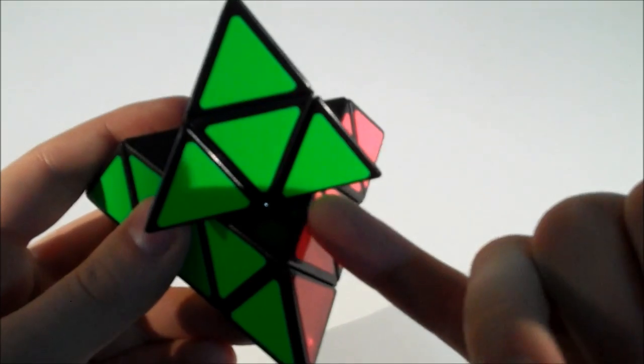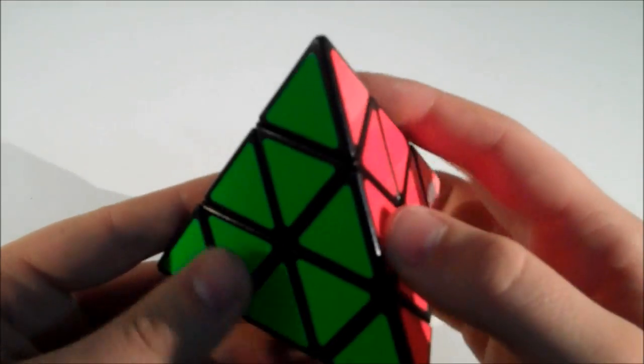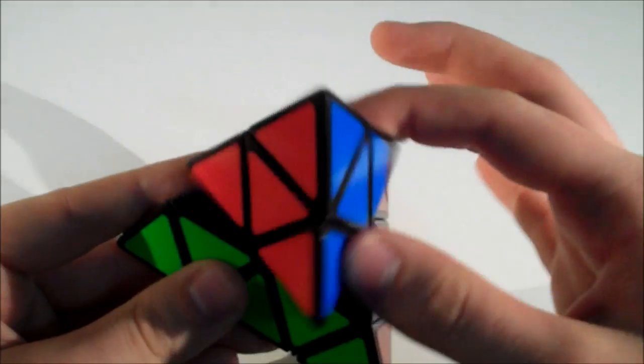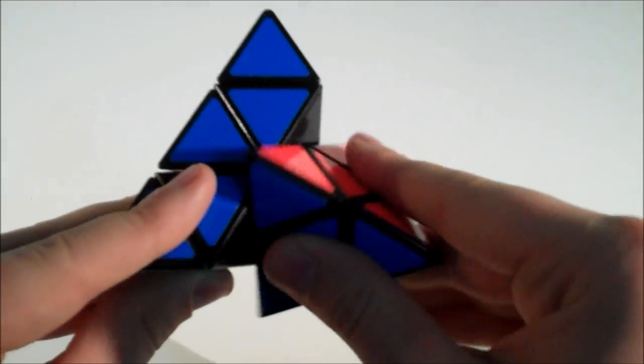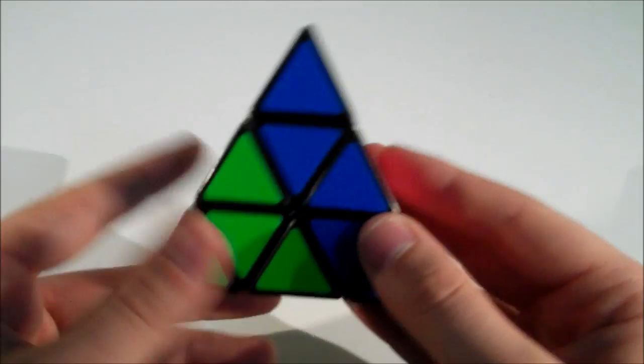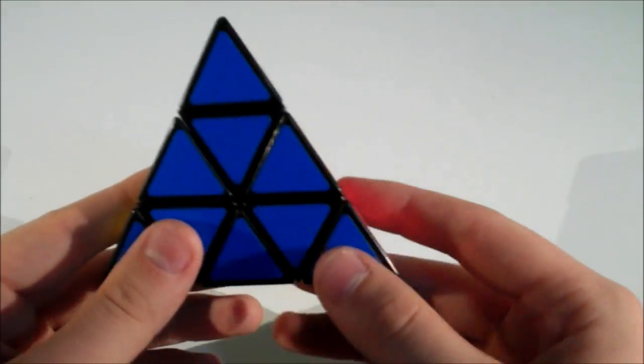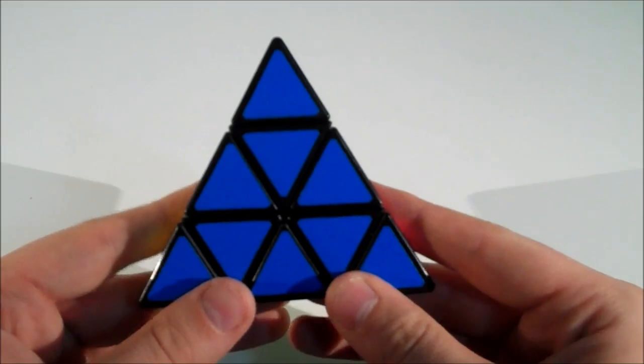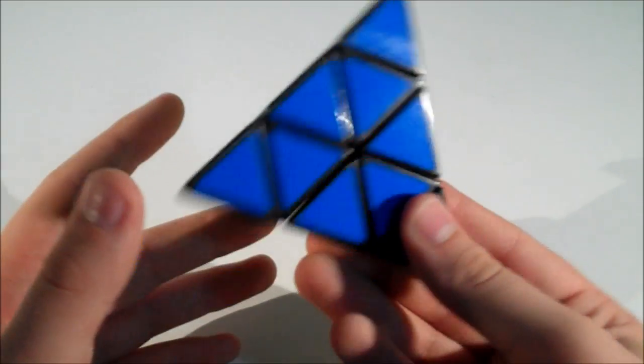And that really helps for alignment issues. I find that I never overshoot with this because every time I turn, a layer snaps into place, and it's really helpful when speed solving. It's really hard to explain the feeling of this puzzle.